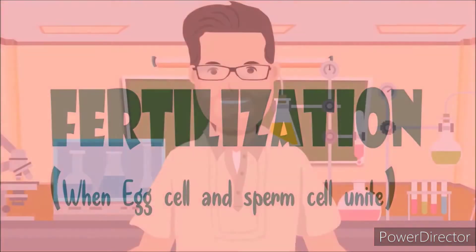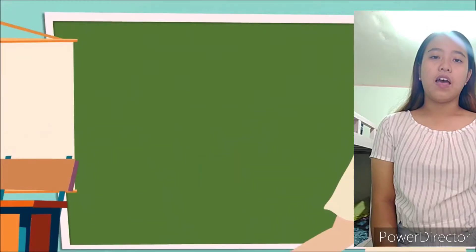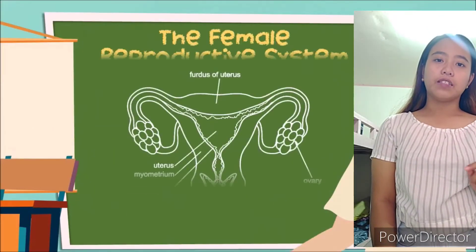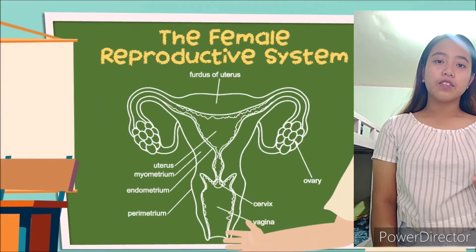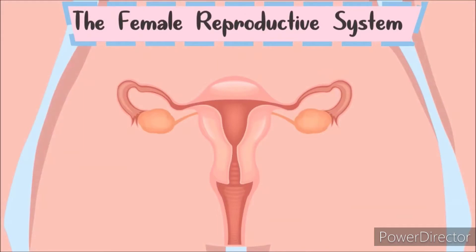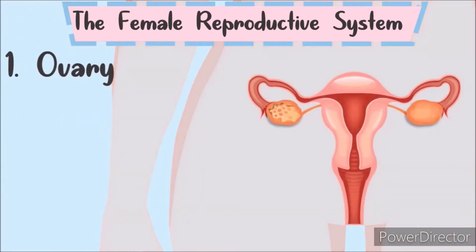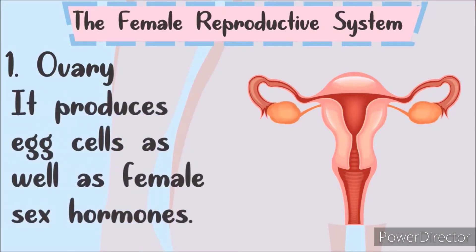Fertilization means one life begins. Now, let's talk about the different parts and functions of the female reproductive system. This is the female reproductive system. Number 1: The Ovary. It produces egg cells as well as female sex hormones.